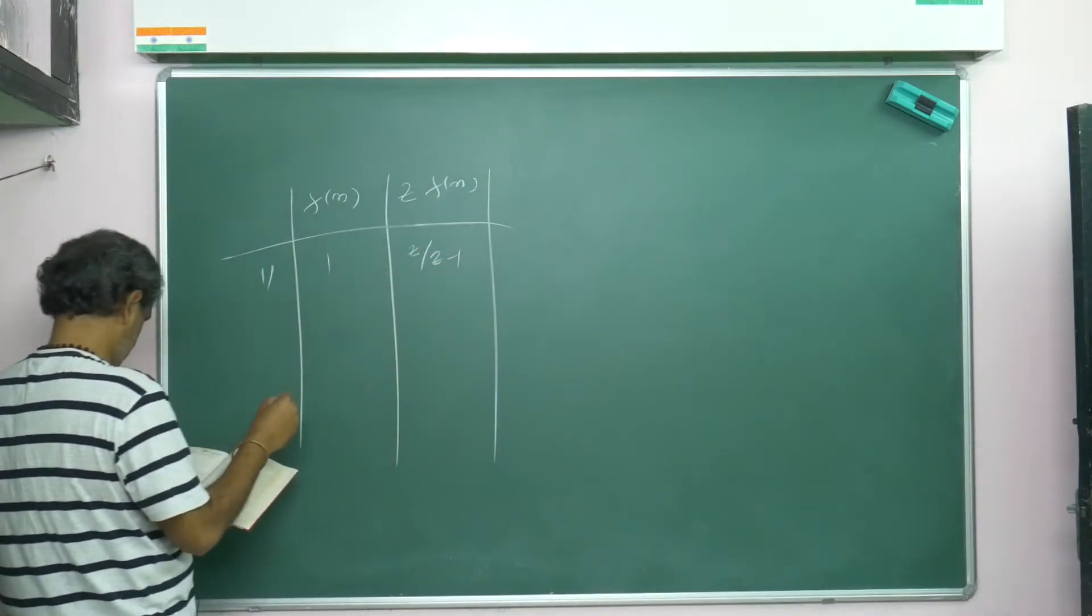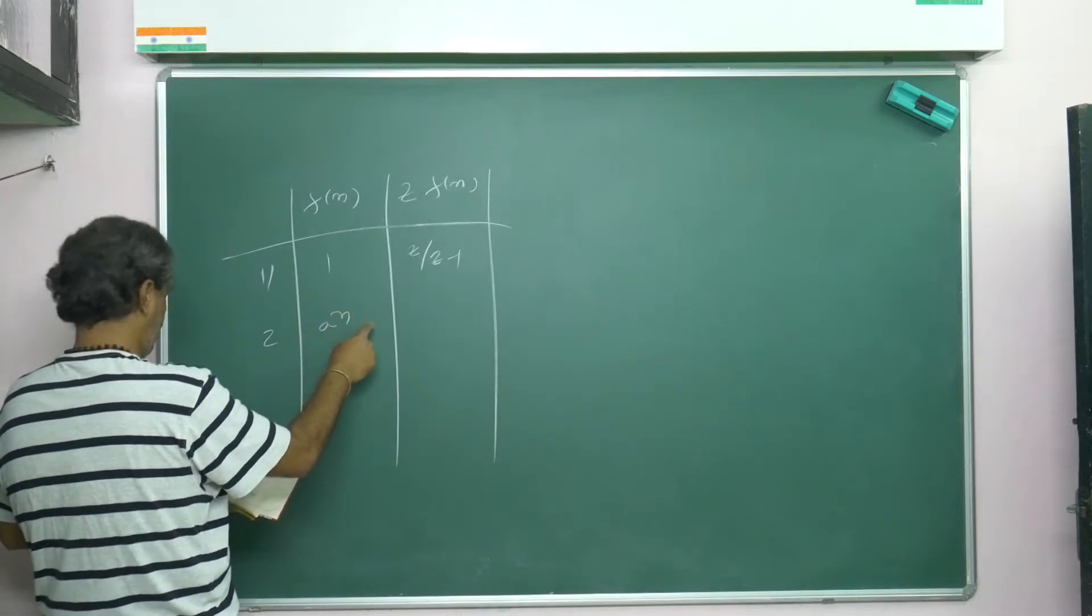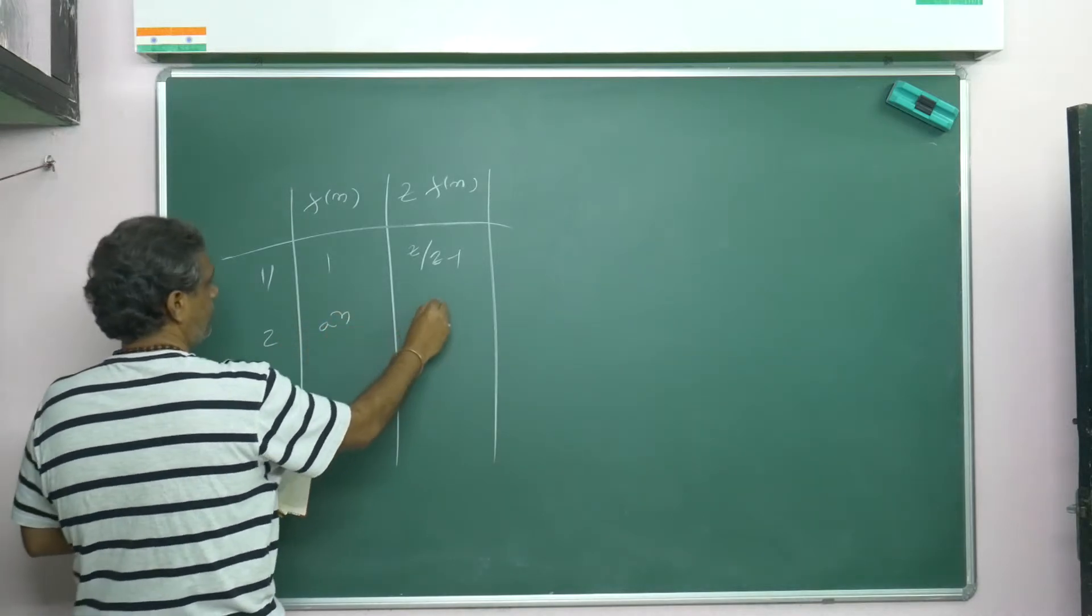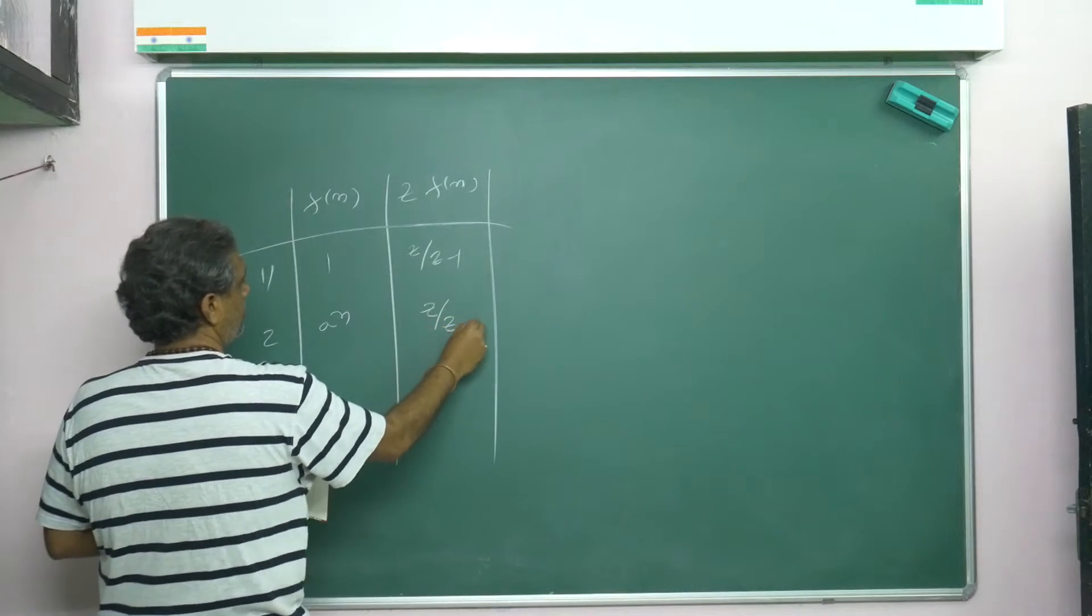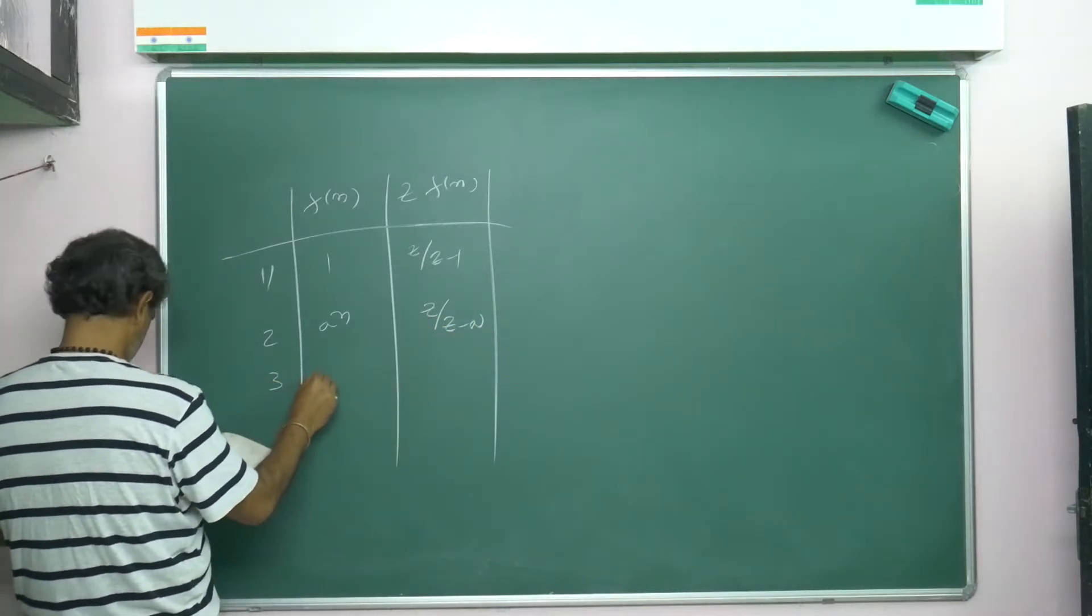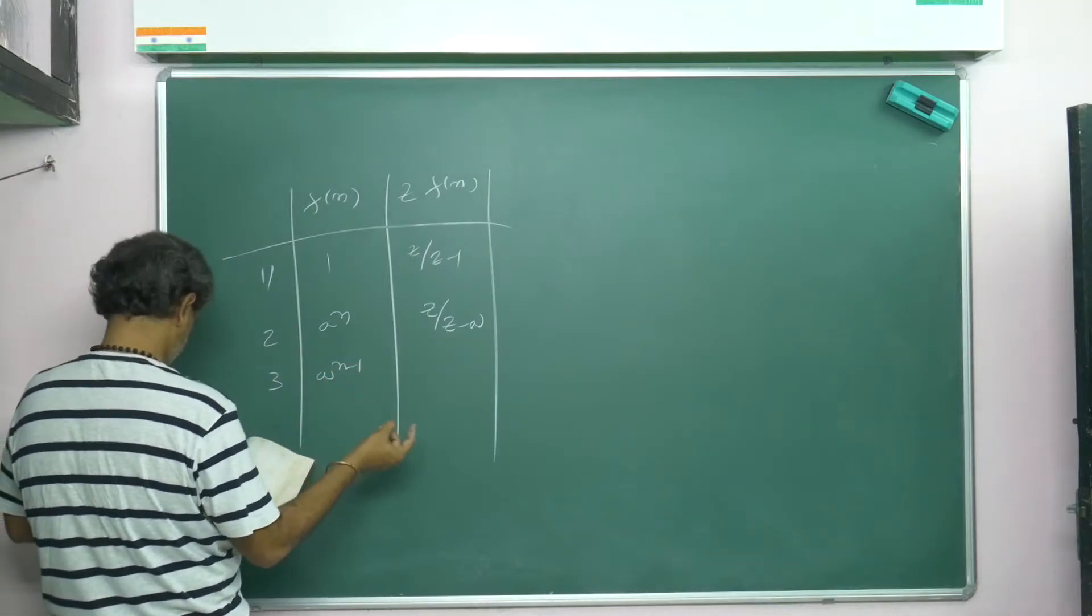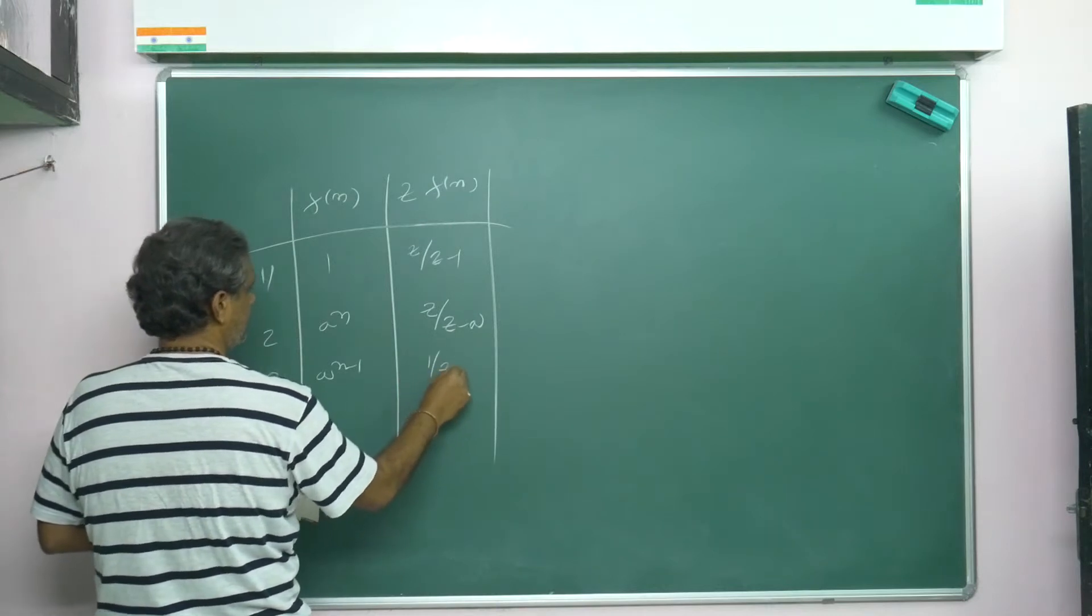Second formula: Z{a to the power n} or a to the power k is z/(z-a). Third formula: a to the power (n-1) or a to the power (k-1), that is 1/(z-a). All of these I will prove, don't worry.